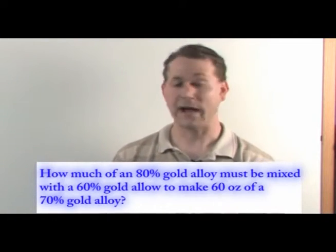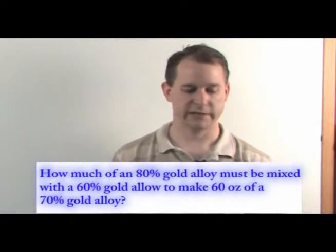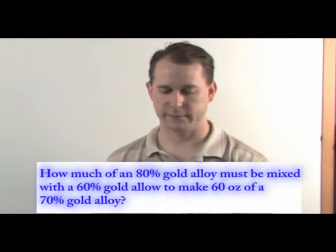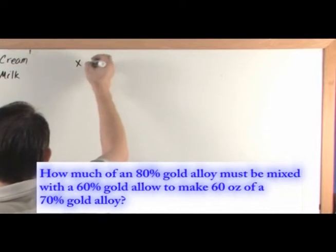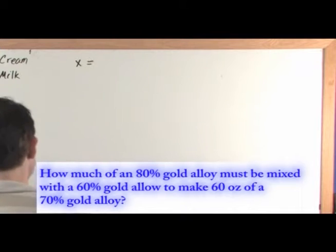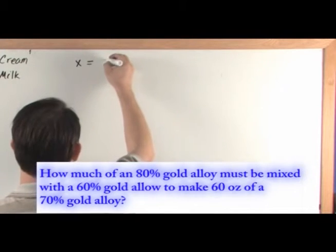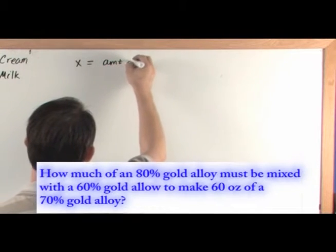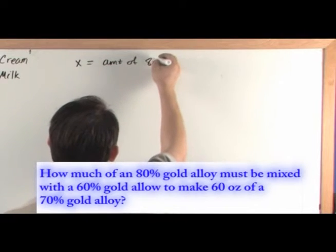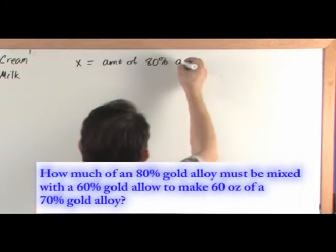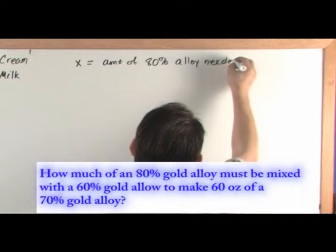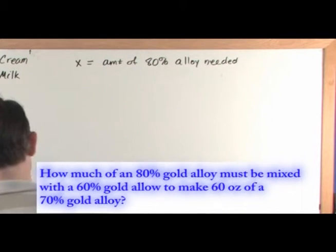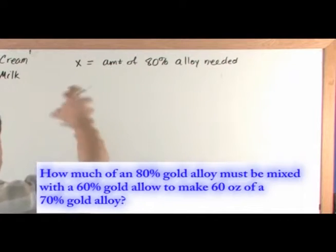You want to know how much of the 80% gold alloy you need to do this. So we're going to let the variable X be equal to what we're trying to solve for. X is going to equal the amount of 80% alloy needed — that's what we're solving for. It says how much of an 80% alloy, so whatever it is, it's going to be X.